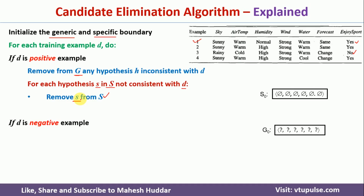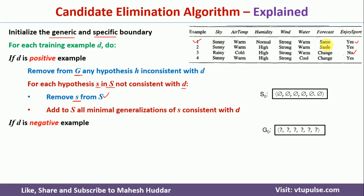After removing the inconsistent hypothesis, we add all minimal generalizations of S that are consistent with D. For example, a null will not match with 'Sunny' since there is no match — the example would be classified as negative, but it is actually positive, so it is inconsistent. We replace the null with the specific value 'Sunny'. If 'Sunny' is already present but the attribute value is 'Rainy', they don't match, so we replace it with a question mark. This is minimal generalization: null is replaced with the specific value, and specific value is replaced with question mark.